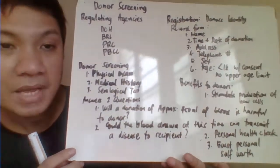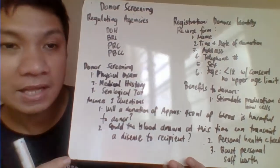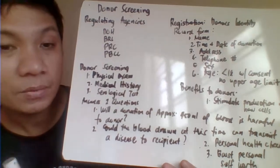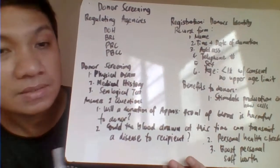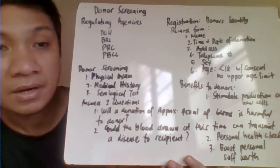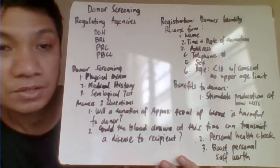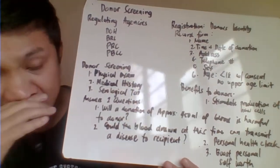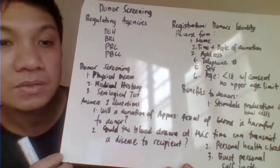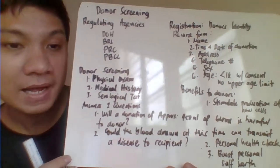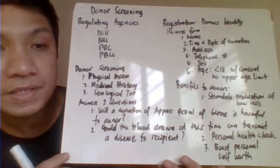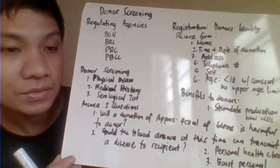Patients undergoing the donation procedure go through three stages during the blood donor collection process. The first is the physical exam, followed by medical history, and then the medical examination including serological tests for infectious diseases.